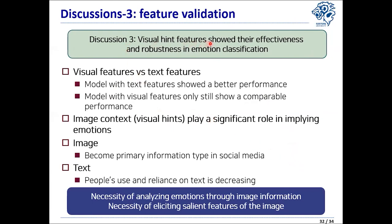The last discussion point is about feature validation. From our model results, we confirmed that visual hint features are effective and robust in classifying emotions. Models with text features show the highest performance, but this requires a sufficient amount of text information. Using visual hints only shows comparable performance to the model with text features. The key takeaway is that images themselves can play a significant role in implying emotions, and given that images have become the primary information type and text is decreasing in social media, our results highlight the necessity of analyzing emotions through image information using visual hints.